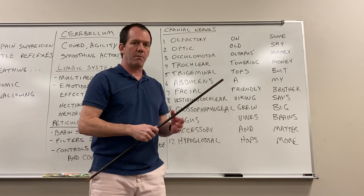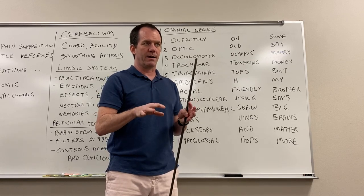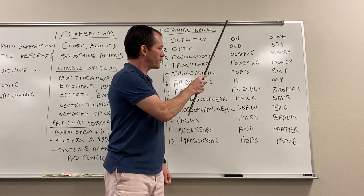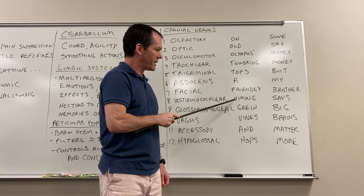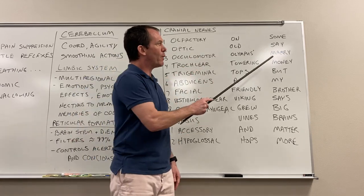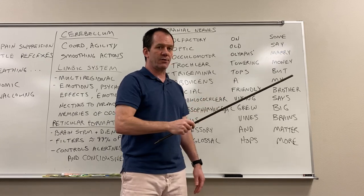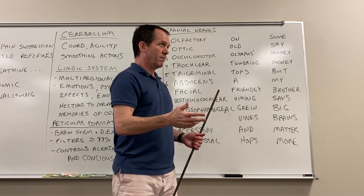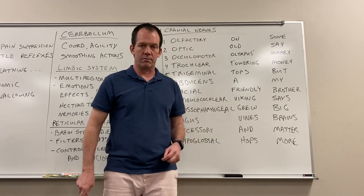Here's a mnemonic to remember them: 'On old Olympus's towering tops, a friendly Viking grew vines and hops.' The first letter of each word corresponds to each cranial nerve in order. For the type of nerve, use: S for sensory, M for motor, B for both. The mnemonic is: 'Some say merry money, but my brother says big brains matter more.'